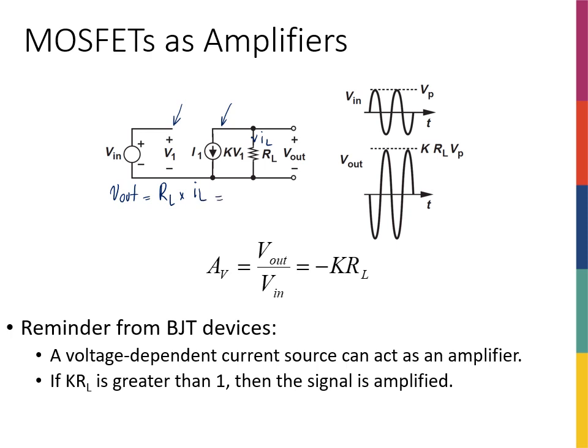This IL is basically negative KV1, simply because this current in the current source cannot go anywhere else other than the RL.